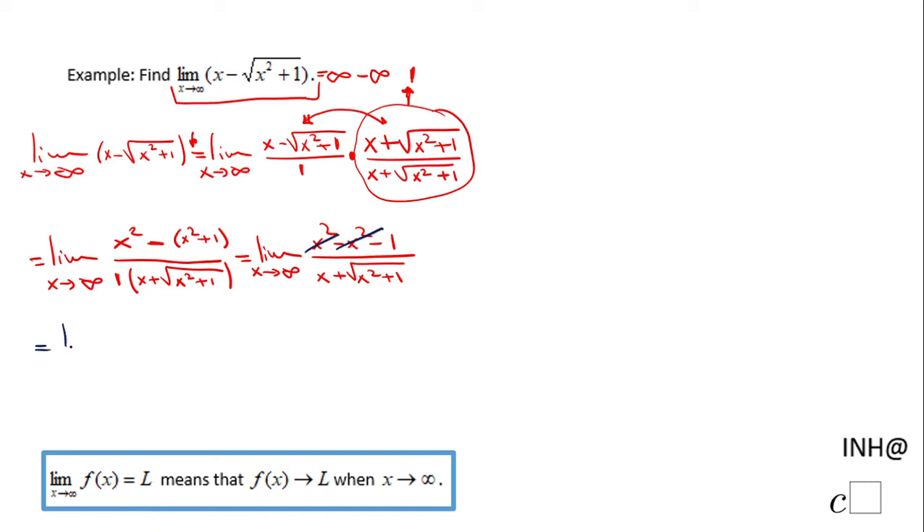we have limit when x approaches infinity of negative 1 over x plus square root of x squared plus 1. If you notice here, once x is getting larger and larger, this is a quotient, so this is going to get closer and closer to 0, and that is the final answer.